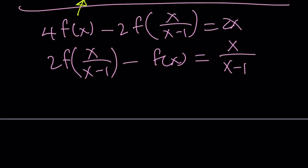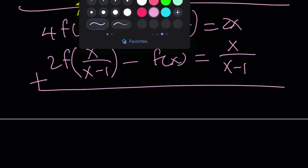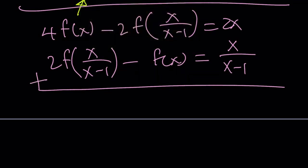Now we can add these equations up and that's going to do the trick. 2 times f of x over x minus 1 is going to cancel out, leaving us with 4 times f of x minus f of x, which is 3 times f of x. And on the right-hand side, we're adding, so it's 2x plus x over x minus 1.